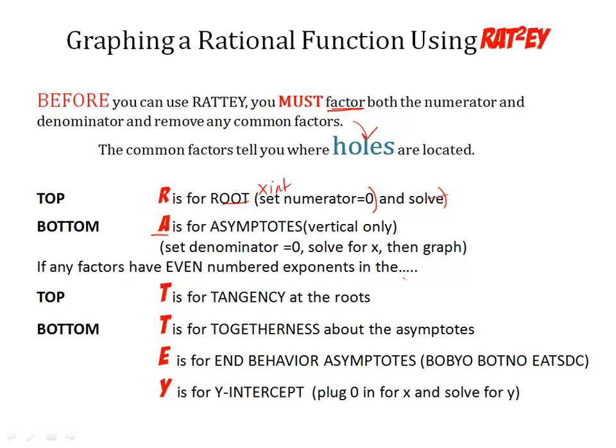Then, if the factors have even numbered exponents in the top or the bottom. So, let me give you an example of what this is talking about. Let's say this is (x+1) times (x-2). If I have even numbered exponents in the top, like this factor right here is even numbered, right? That means I have tangency at the roots. Tangency means it bounces. Just like multiplicity, it's the same thing. So it's going to bounce. That's what tangency means. And you have to answer, where is it going to bounce? Well, where does this factor equal 0? Well, that's at (-1, 0). So the graph is going to bounce there. That's what we mean by tangency.